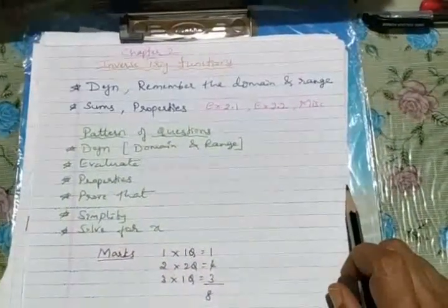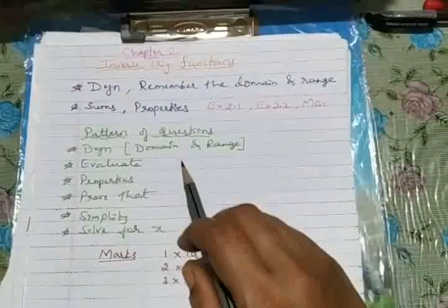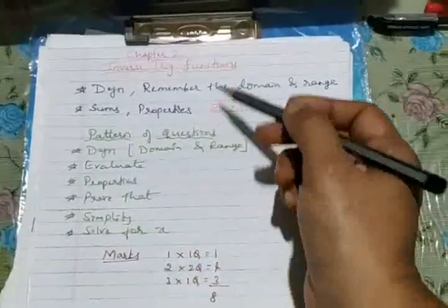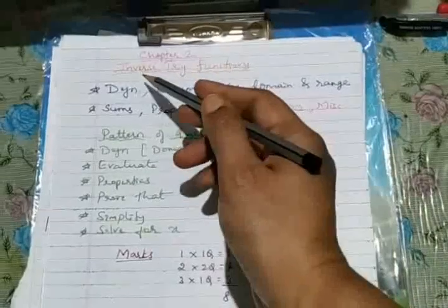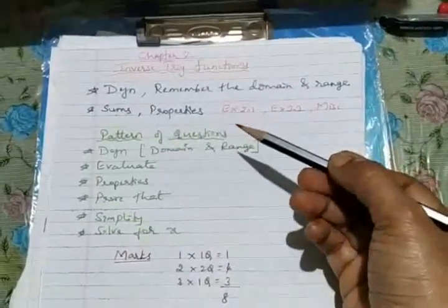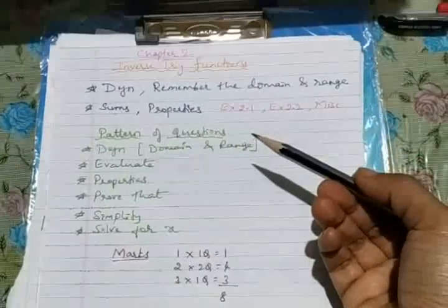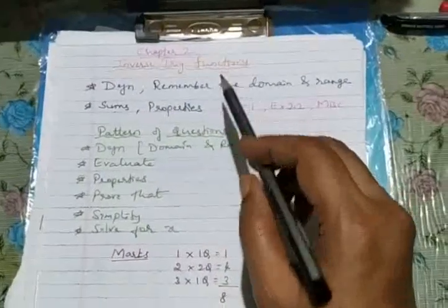That topic also you have to revise, and once you are perfect in trigonometric functions followed by what do you mean by function, followed by what do you mean by inverse functions where you speak about something special one-one and onto relation. Got it? So then you can move for inverse trigonometric functions.